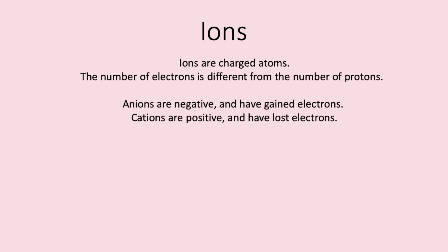An ion is a charged atom. Here, the number of electrons is different from the number of protons as it has gained or lost electrons. We call an atom that has gained electrons an anion. It becomes negative as electrons have a negative charge. We call atoms that have lost electrons cations. These are positive.